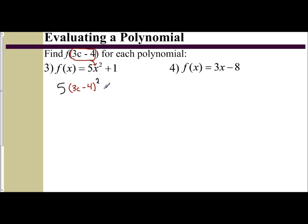And then simplify. Now remember, to square a binomial means you're actually multiplying it by itself. So you have 3c minus 4 times 3c minus 4. And then you're just distributing.